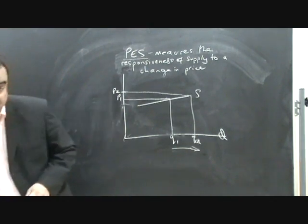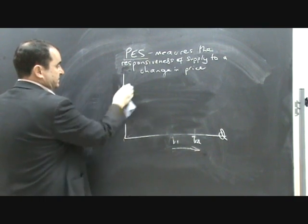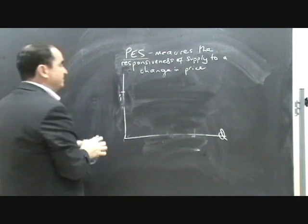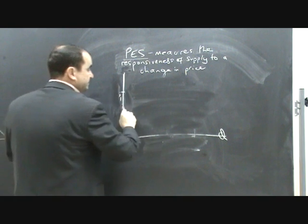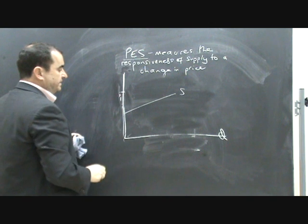Well, actually the rule is this. If the supply curve passes through the price axis, let me just tidy this up a little bit. If the supply curve passes through the price axis, it will be elastic supply.